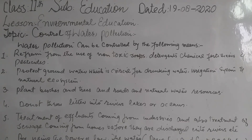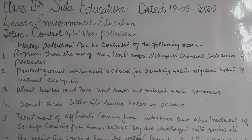Number six: by using the power of law. The Water Prevention and Control of Pollution Act was enacted in 1974 to provide for the prevention and control of water pollution and for the maintaining or restoring of wholesomeness of water in the country. The act was amended in 1988. By using the above mentioned methods or means, we are in a position to control water pollution.